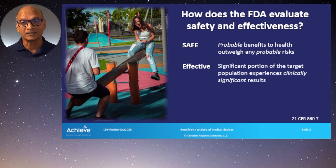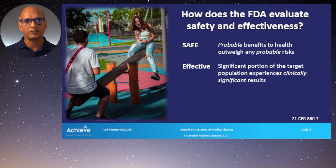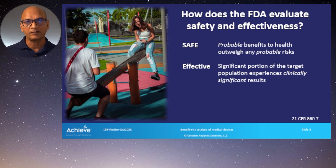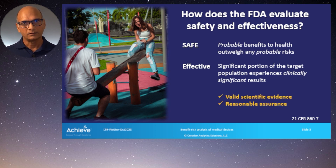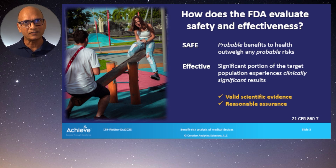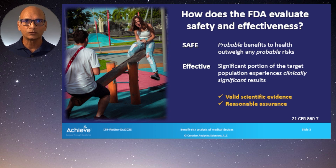What about effectiveness? Effective means that a significant portion of the target population experiences clinically significant results. Benefits are tied to effectiveness, and it's the balance between those benefits and risks that we evaluate to judge safety and effectiveness. FDA expects valid scientific evidence and reasonable assurance — and that word 'reasonable' indicates a judgment is involved. What's reasonable? It depends.